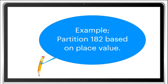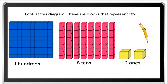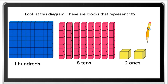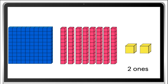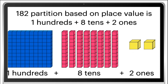Example: Partition 182 based on place value. Look at this diagram. These are blocks that represent 182 — 1 hundreds, 8 tens, 2 ones. Partition based on place value is: 1 hundreds plus 8 tens plus 2 ones.